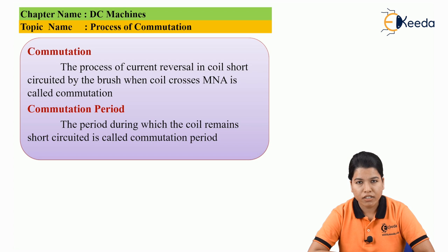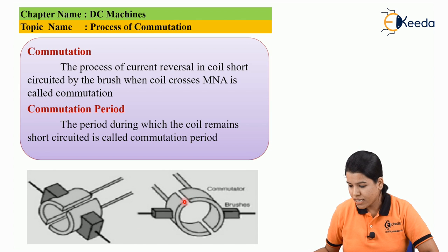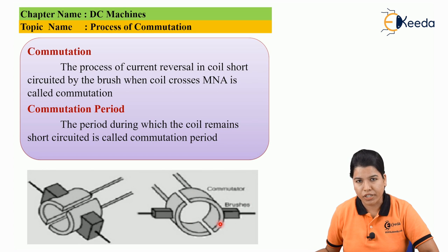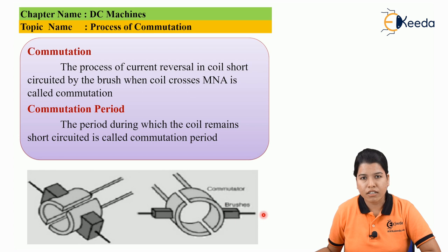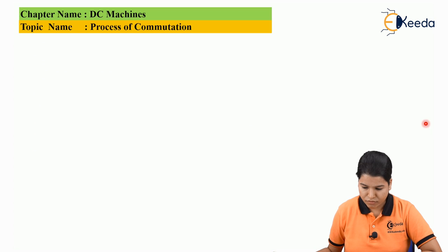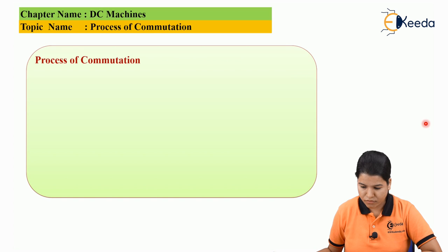The period during which the coil remains short-circuited is called as the commutation period. Here we can see the commutator and the brushes which are connected to it. Whatever current is generated is collected by the brush and given to the external circuit. Now let us see what is the process of commutation.